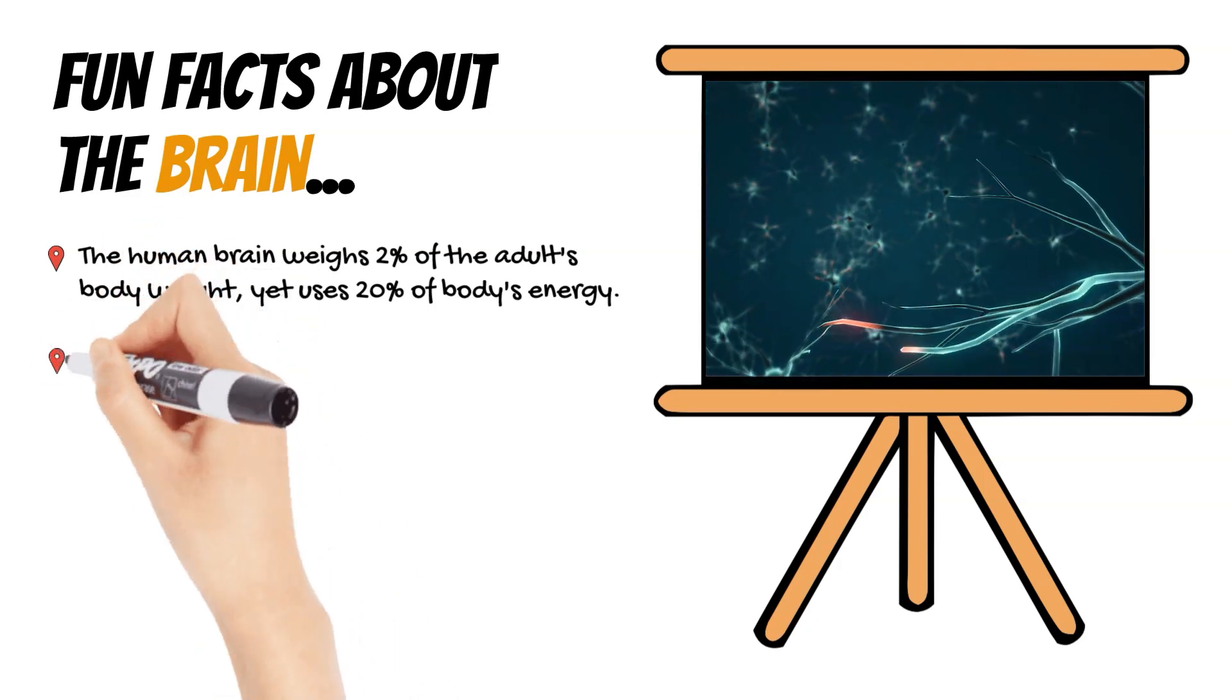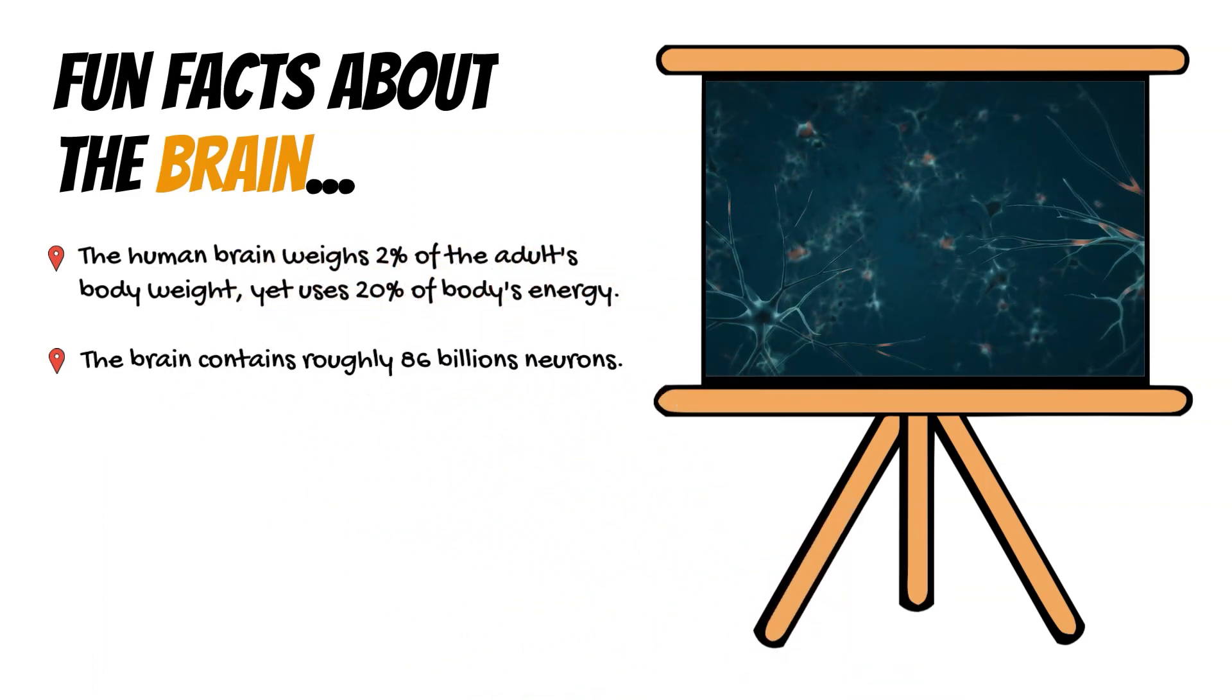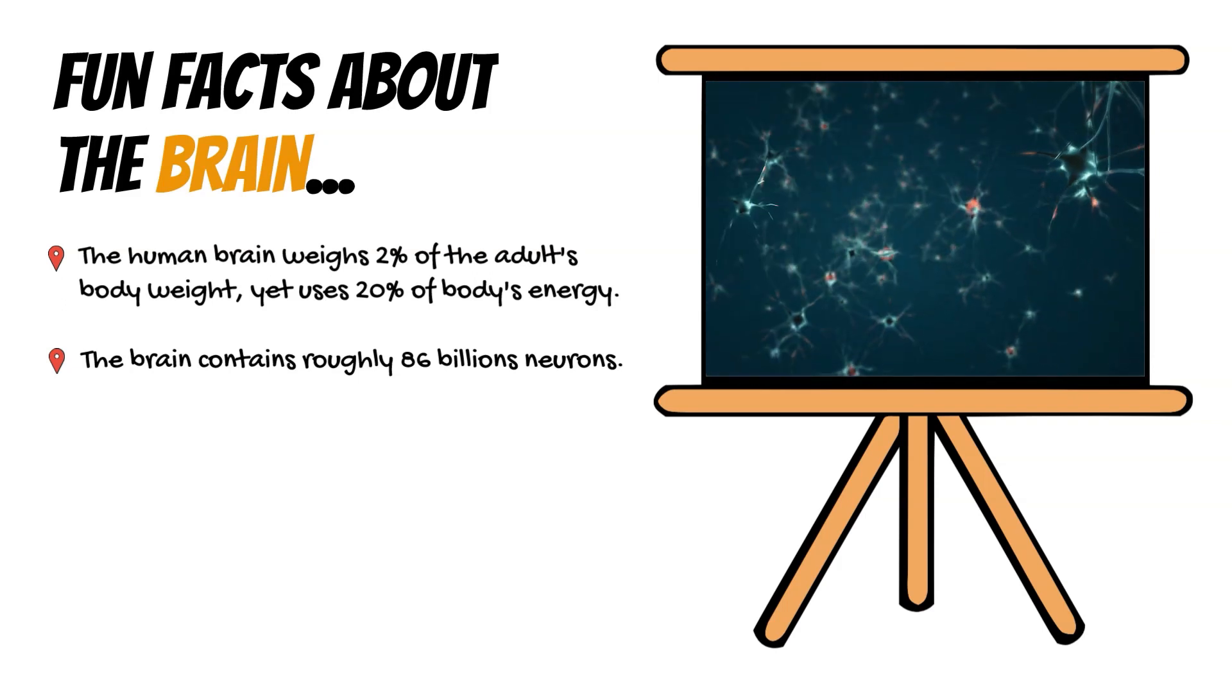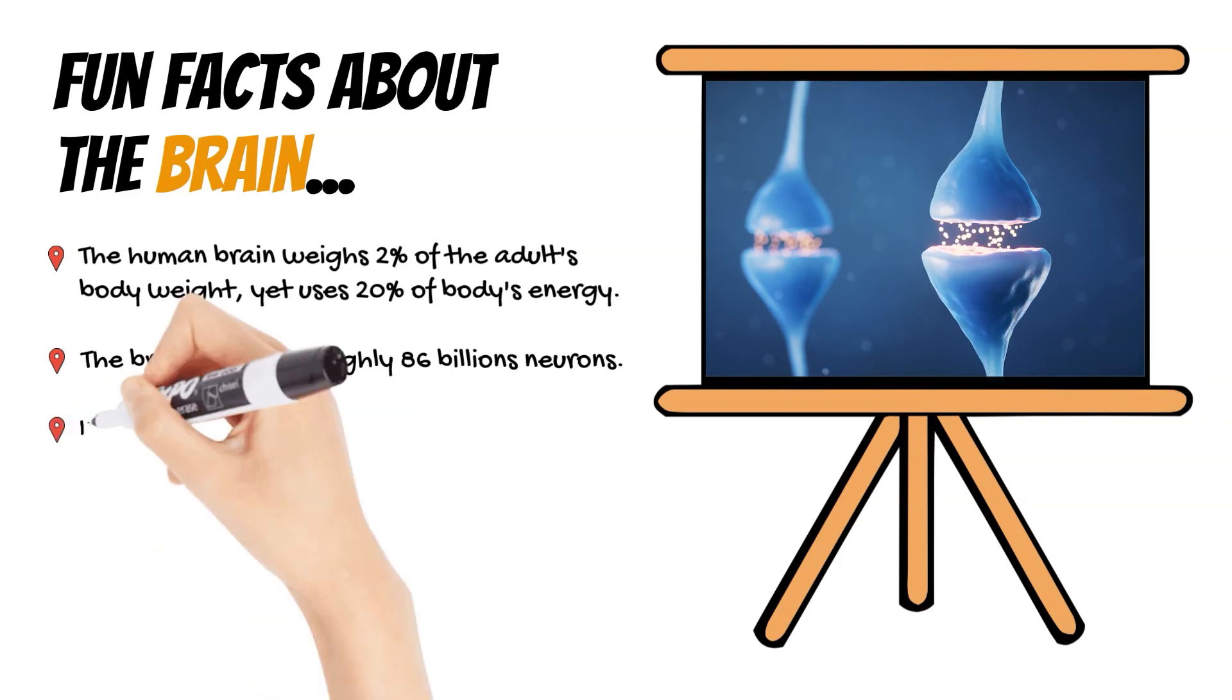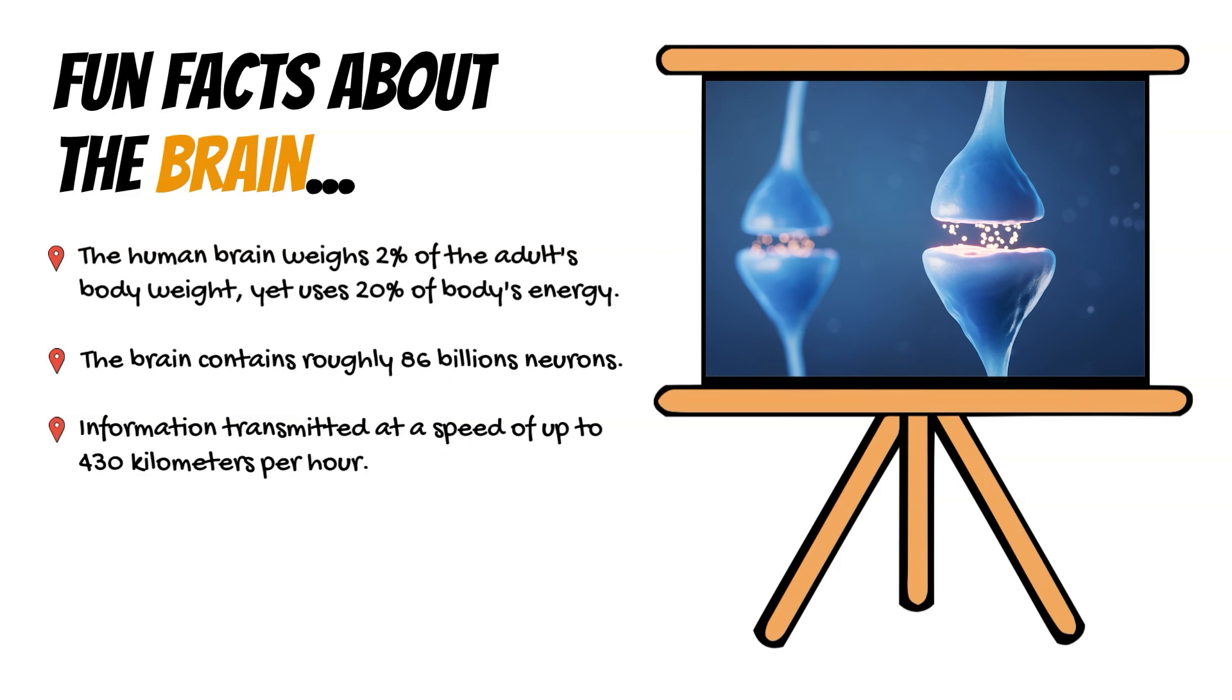While we've explored neurons in depth, it's astounding to think our brains contain roughly 86 billion neurons. If you tried counting them at one neuron per second, it would take over 2,700 years. Information in your brain travels at an impressive speed of up to 430 kilometers per hour. That's faster than Formula One race cars.